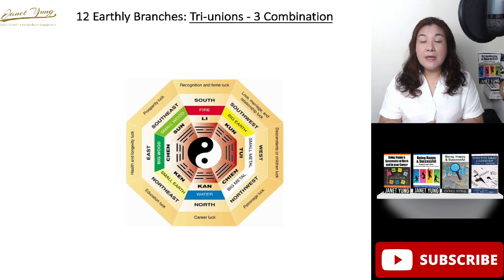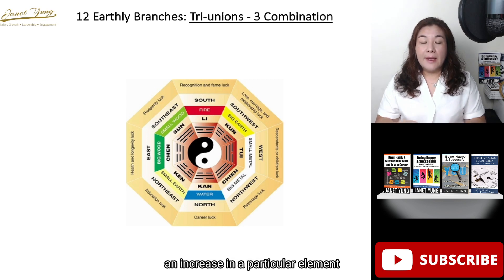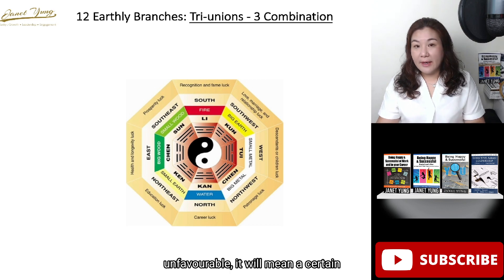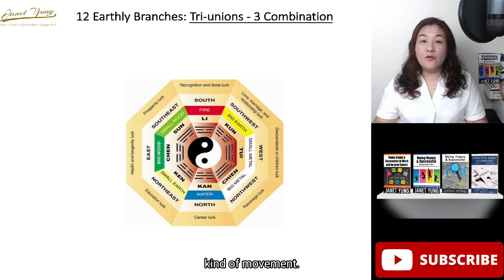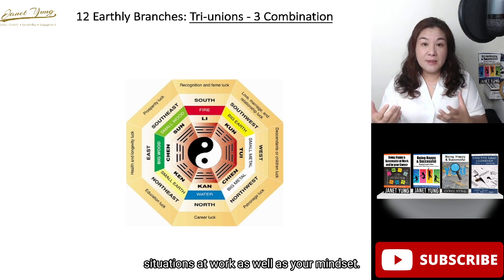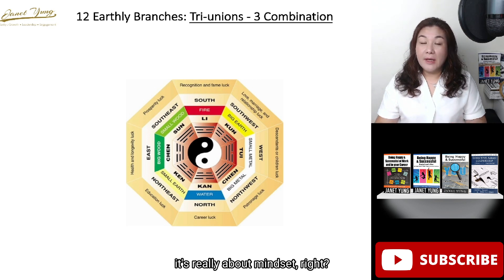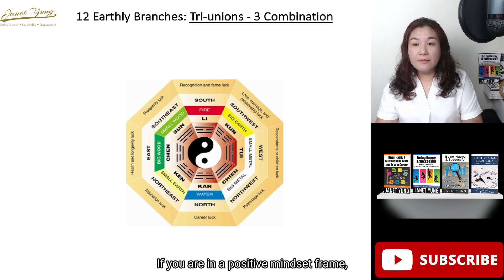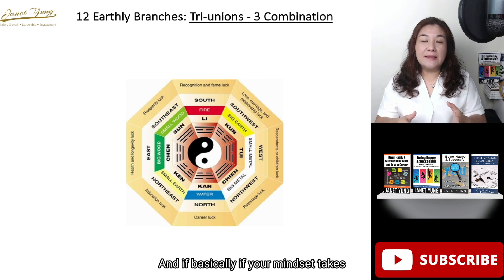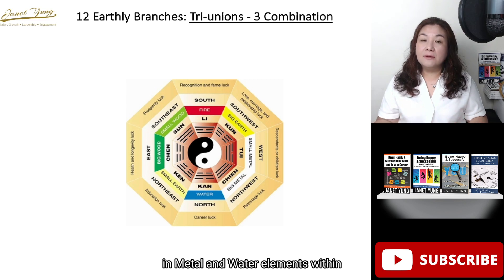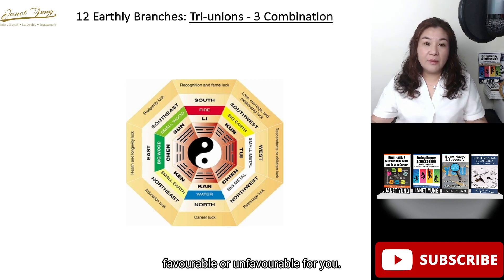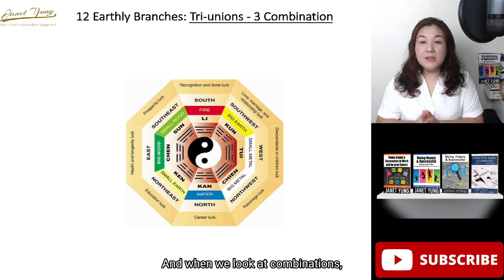Before we go on to clashes, I'd like to talk about combinations. Combinations within our chart can bring about an increase in a particular element. Depending on whether that element is favorable or unfavorable, it will mean a certain kind of movement or change in how you deal with people or situations at work, as well as your mindset. If you are in a positive mindset, most times the element is favorable for you. If your mindset takes a downturn, perhaps there's an increase in metal or water elements. When looking at combinations, especially tri-union combinations, we normally look at the four cardinal animals.